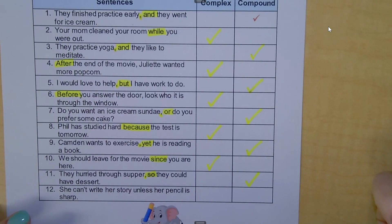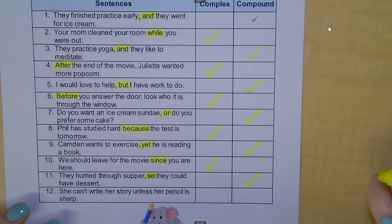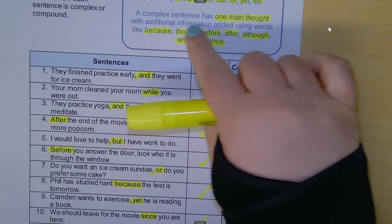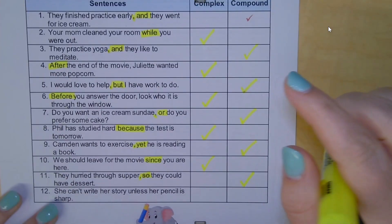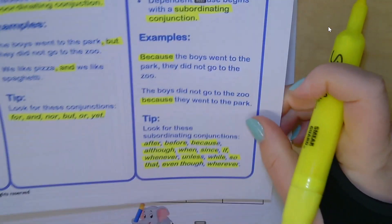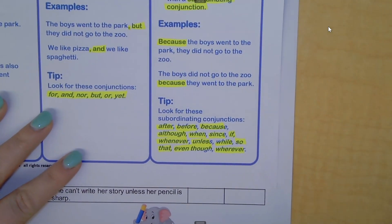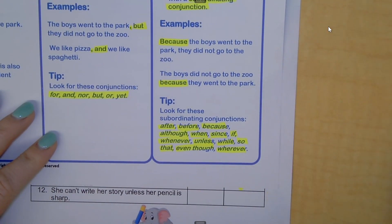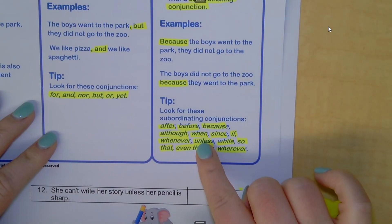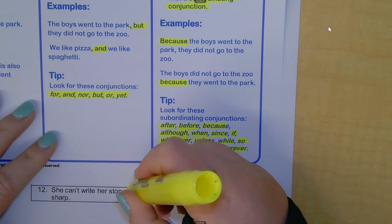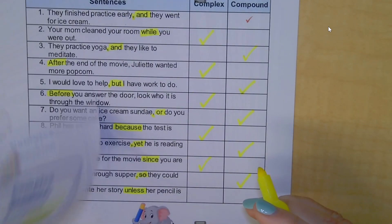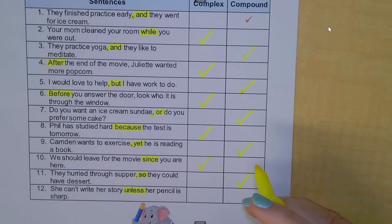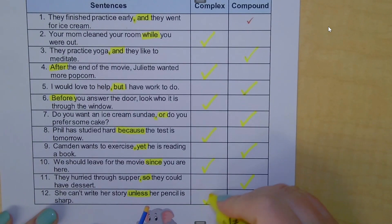Number twelve: 'She can't write her story unless her pencil is sharp.' I don't see a FANBOY here, so let's pull our list out again. Do you see the word? 'Unless' — unless is a subordinating conjunction, which tells me this is a complex sentence.